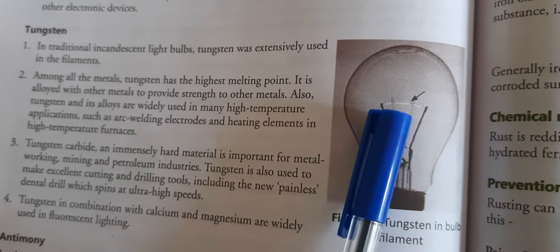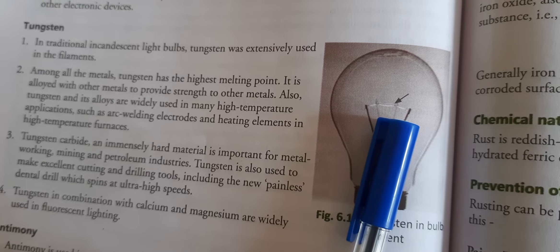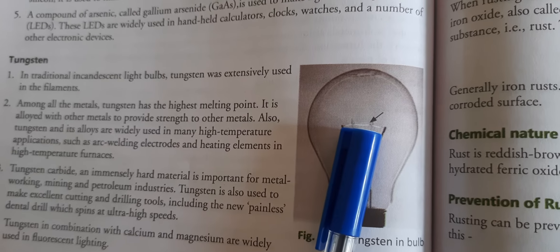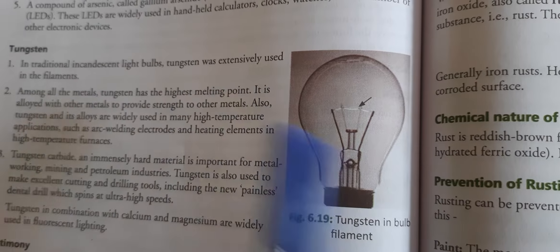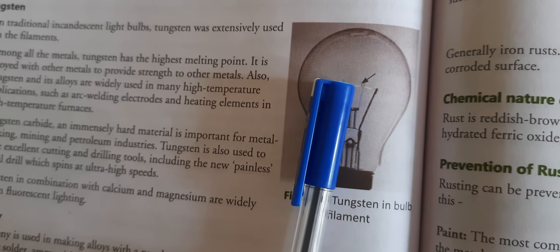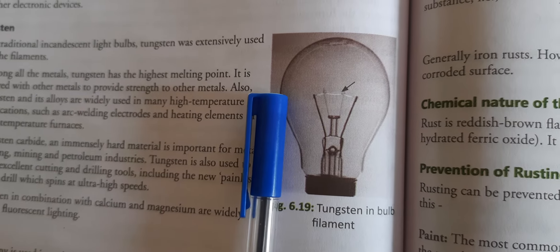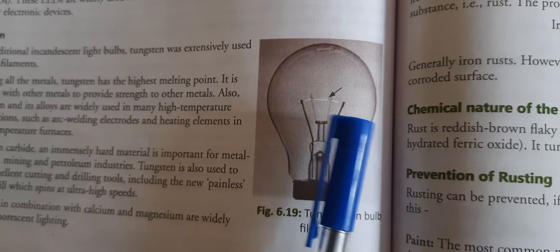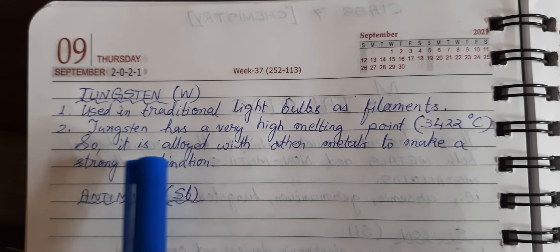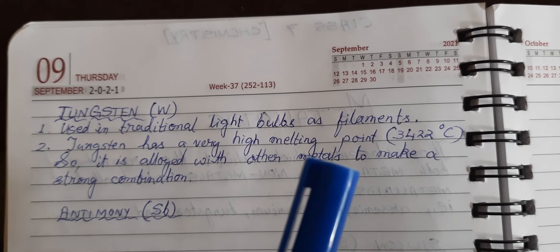When electricity passes through the filament, the temperature of the filament increases very high, but it does not fuse easily. This property of tungsten was used to make filaments of electric bulbs. When electricity passes through the bulb, the tungsten glows and emits light. When the temperature surpasses 3422 degrees Celsius, the tungsten fuses and cuts, causing the bulb to fuse. Since tungsten has a very high melting point, it is also alloyed with other metals to make strong combinations.